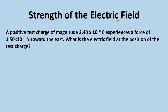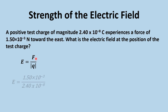Let's solve an exercise. A positive test charge of magnitude 2.4 × 10⁻⁸ coulombs experiences a force of 1.5 × 10⁻³ newtons directed towards the east. What is the electric field at the position of the test charge? Since we have the charge and the force and want the field, we use E = F/Q. F is given and Q is given, so E is the unknown. We substitute: F = 1.5 × 10⁻³ N and Q = 2.4 × 10⁻⁸ C.